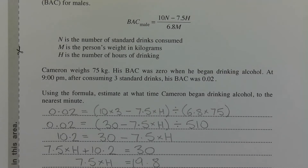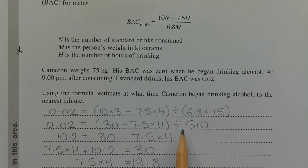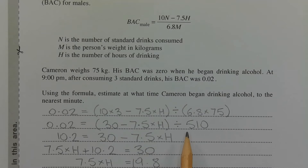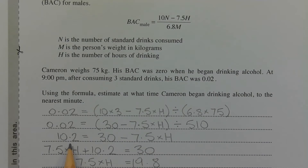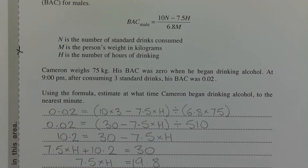Now we can start the process of rearranging this formula to make H the subject. Multiplying both sides of the equation by 510 — since multiplication is the opposite of division — we get 10.2 is equal to 30 minus 7.5 times H.